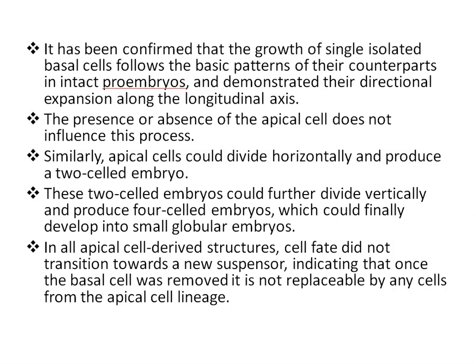Directional growth of the basal cell lineage is similar with or without apical cell connections. Growth and expansion in the basal cell and its daughter cells occurs mainly along the longitudinal axis of the cell. It has been confirmed experimentally that the growth of single isolated basal cells follows the basic pattern of their counterparts in intact pro-embryos, demonstrating their directional expansion along the longitudinal axis. The presence or absence of the apical cell does not influence this process, and the process can proceed autonomously not only in isolated basal cells but also in subsequent suspensor cells.